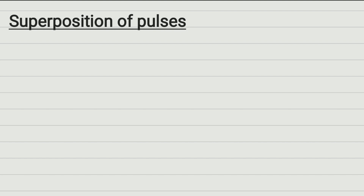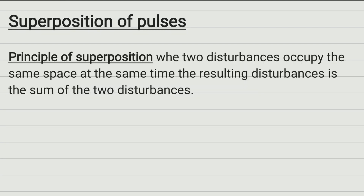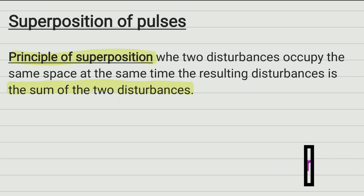Now we're going to be talking about something called superposition of pulses. Sometimes pulses can meet — more than one pulse may move through the same medium and those pulses may meet at some time. When they meet, something happens called superposition. The principle of superposition says: when two disturbances (pulses) occupy the same space at the same time, the resulting disturbance is the sum of the two disturbances. After they meet, each of them continues moving in the previous direction.